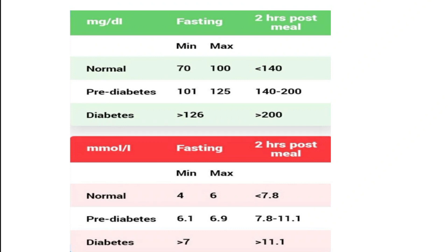Next is diabetes. A diabetes patient's fasting blood sugar level is more than 126 mg per dL. So if fasting blood sugar is 126 mg/dL or above, the person is classified as a diabetic patient.